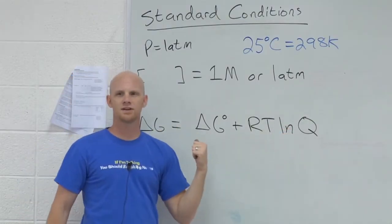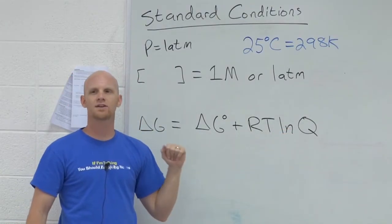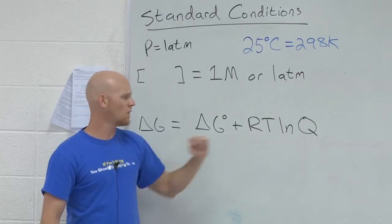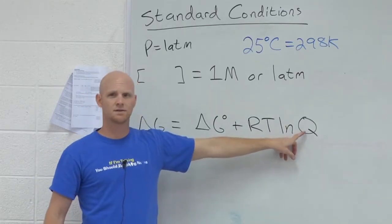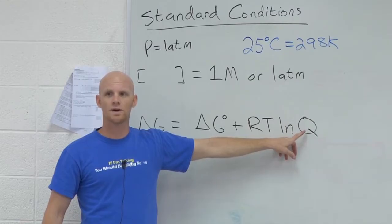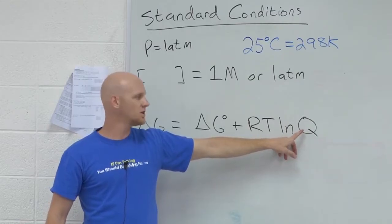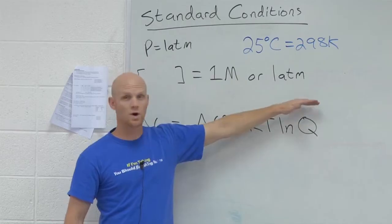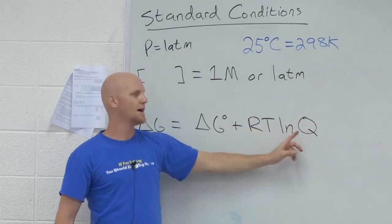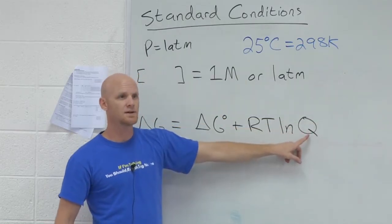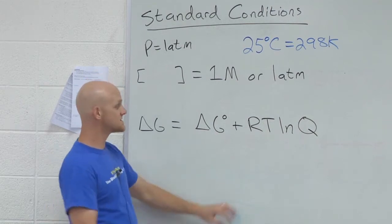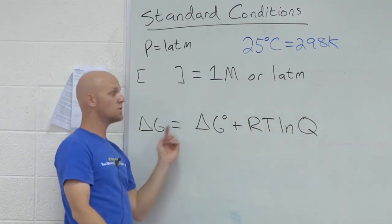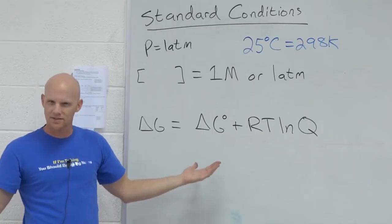Notice, what if you were under standard conditions and all reactants and products had concentrations of one? What would Q be under that case? If all reactions and products were one, then Q would be one over one, which is one. And what's the natural log of one? Zero. And under those conditions, this second term would go away. And your delta G would equal the standard value. So this kind of makes sense.